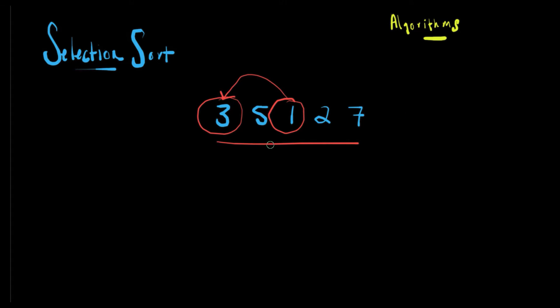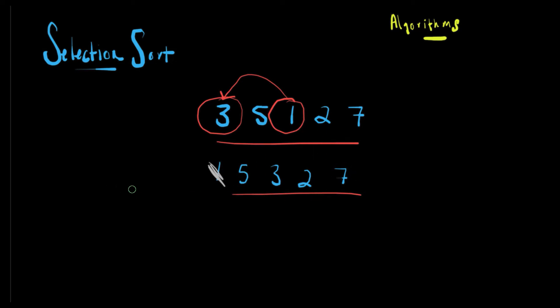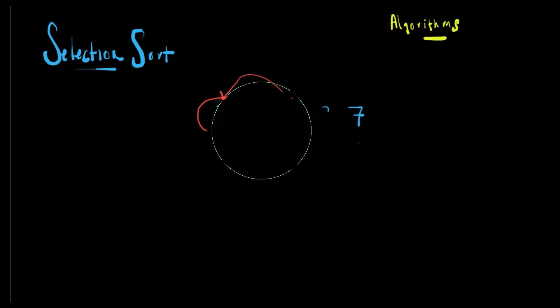We're going to swap it and our outcome will be one, five, three, two, and seven. Then we're going to cross out that one because it's considered sorted. After that we're going to repeat the whole process again with these four numbers and keep going until all the numbers are sorted. Let's do this with an array of maybe six numbers to show you the whole process.